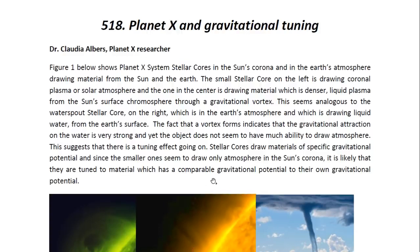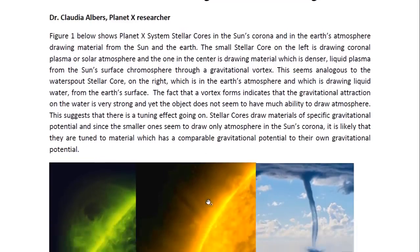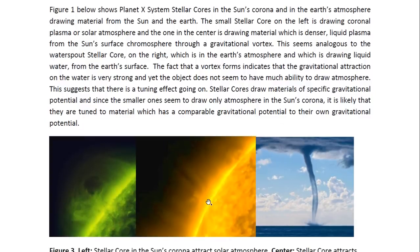Figure one below shows Planet X system's stellar cores in the Sun's corona and in the Earth's atmosphere, drawing material from the Sun and the Earth. The small stellar core on the left is drawing coronal plasma or solar atmosphere, and the one in the center is drawing material which is denser — liquid plasma from the Sun's surface chromosphere through a gravitational vortex. This seems analogous to the water spout stellar core on the right, which is in the Earth's atmosphere and which is drawing liquid water from the Earth's surface.